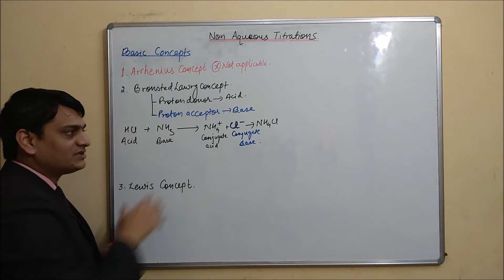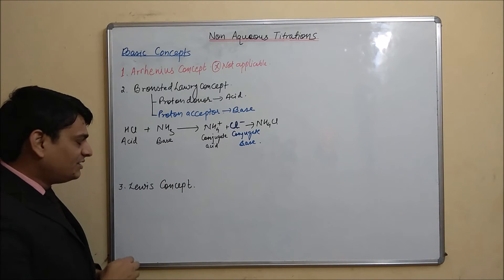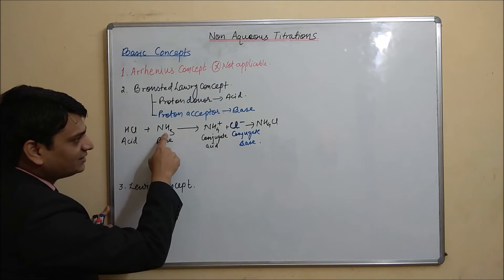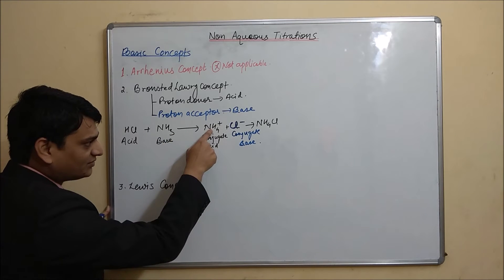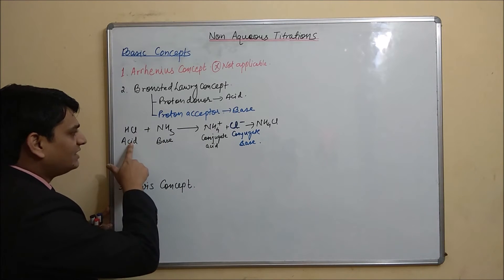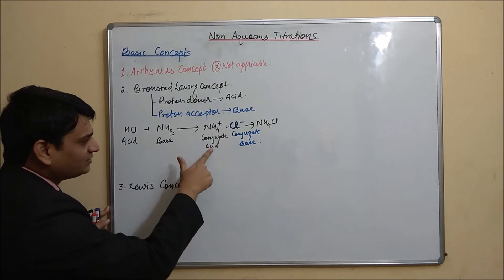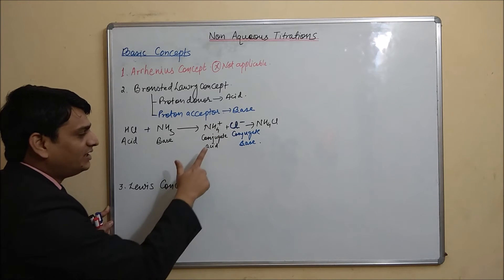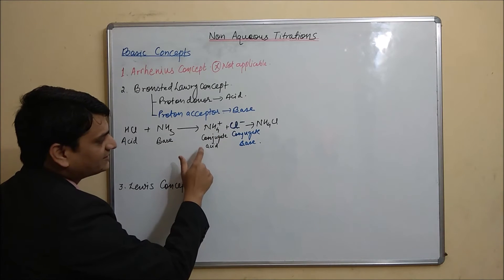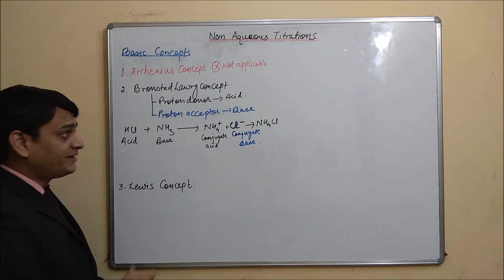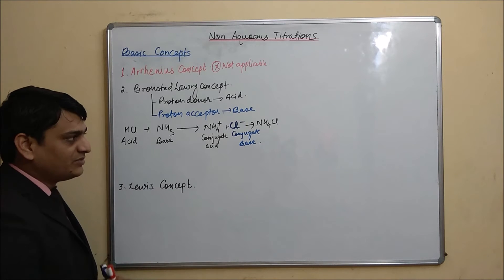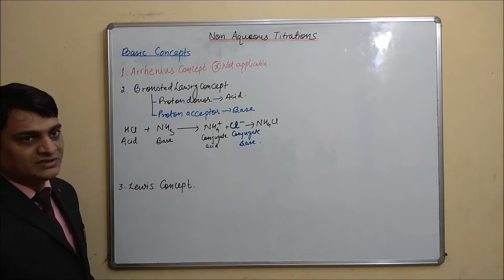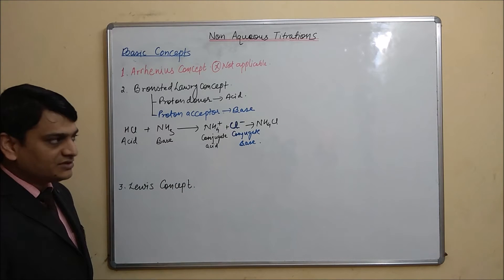That is why the Bronsted-Lowry concept is also known as the conjugate acid-base concept. Here HCl is the acid, it is donating one proton to NH3. NH3 is converting into NH4⁺ and Cl will be converted to Cl⁻. NH4⁺ will act as a conjugate acid because it has one hydrogen ion, and Cl⁻ can act as a conjugate base because it is able to accept one H⁺ ion.